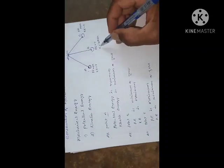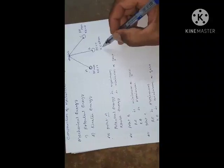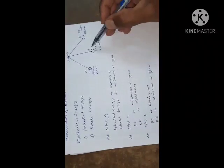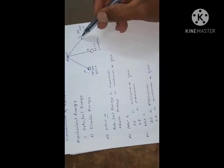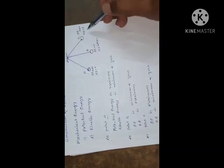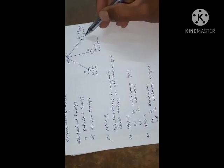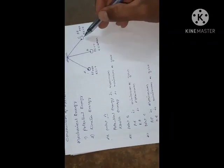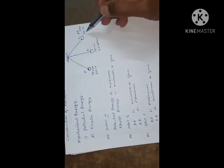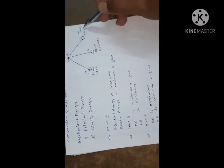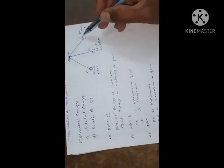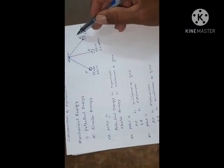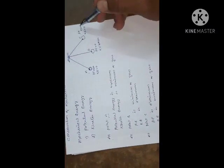By using this kinetic energy, the body moves to the other end. On reaching point C, the velocity becomes zero, that is, the kinetic energy becomes zero, but the potential energy becomes maximum.